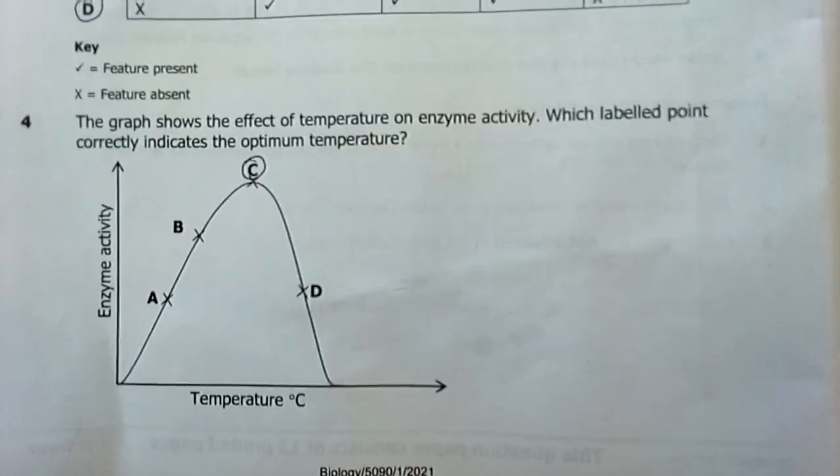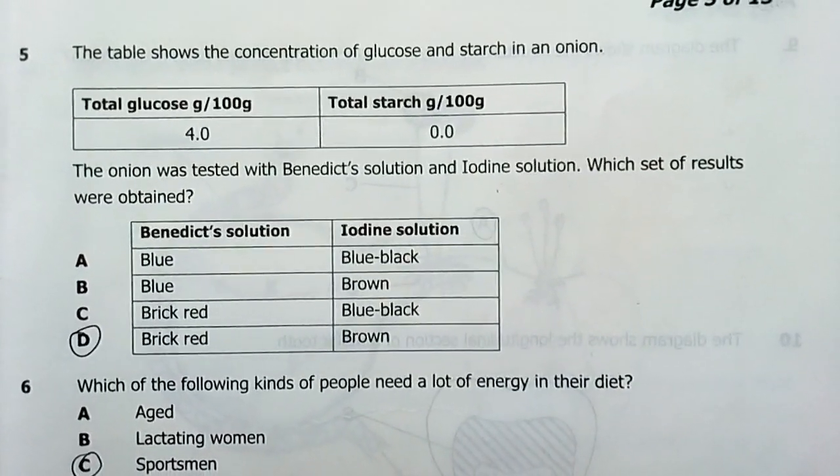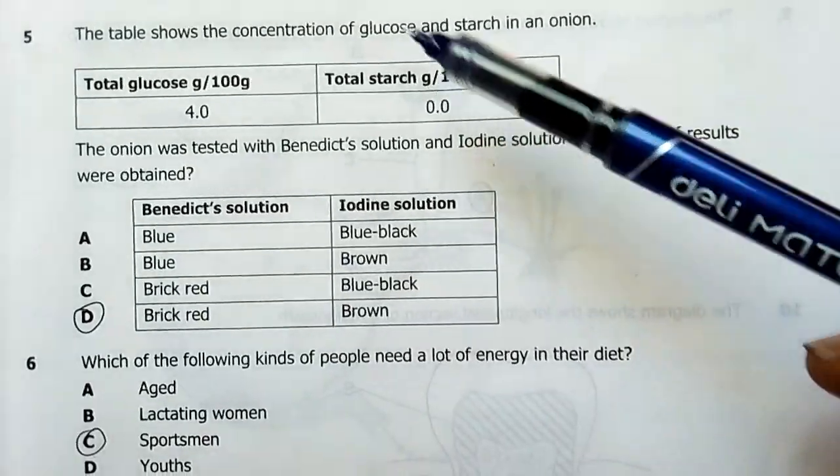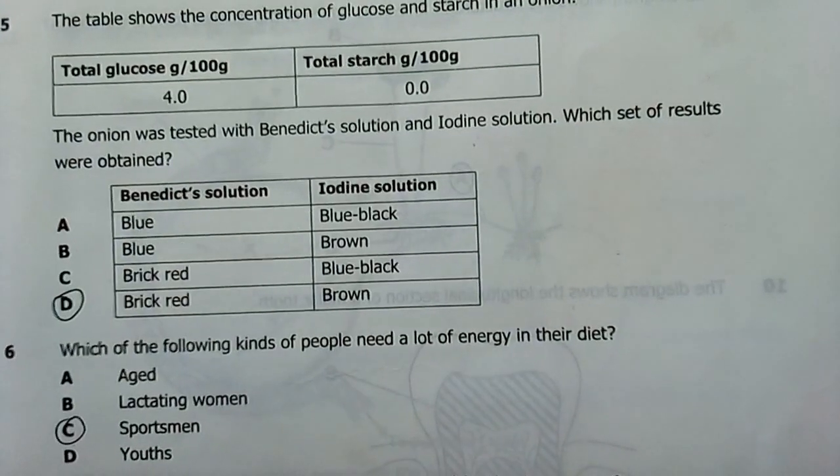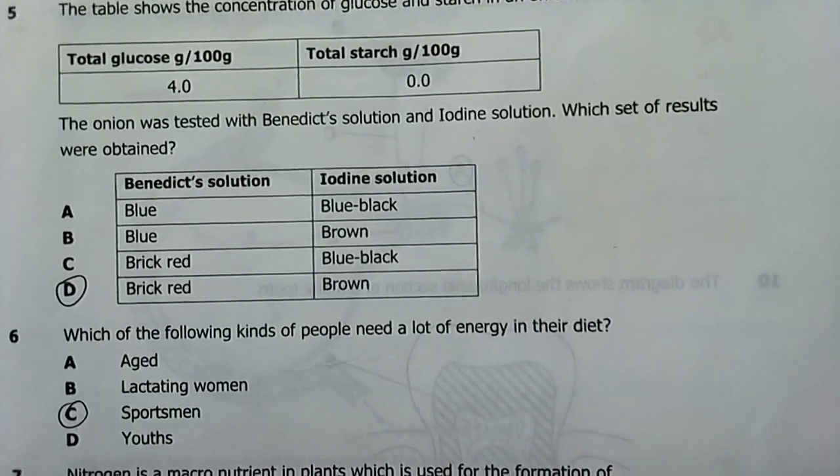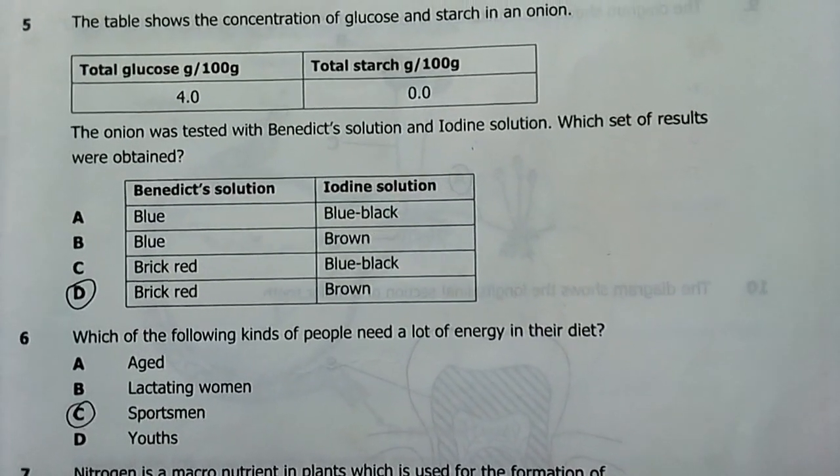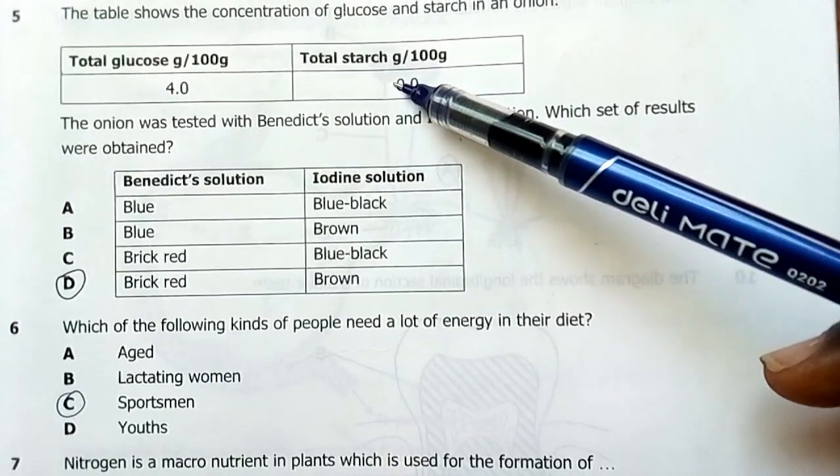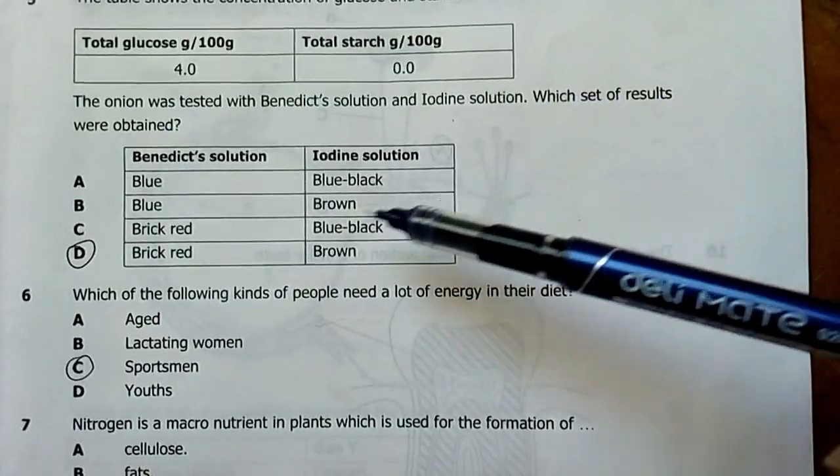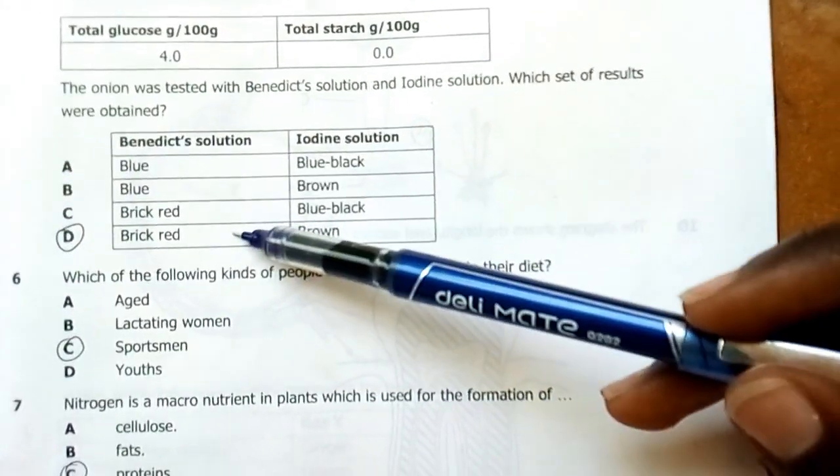We get to question five. The table below shows a concentration of glucose and starch in onion. Starch is zero, glucose is four. Onion was tested for Benedict solution and iodine solution. Which set of results were obtained? There is no starch, so iodine will not prove anything. It will remain brown. Benedict, this is the test for reducing sugars. It will come out as brick red. So, the answer is D.